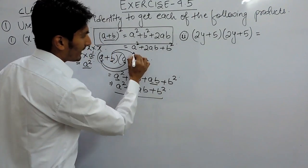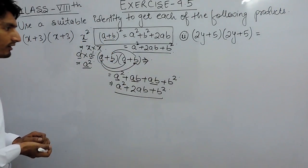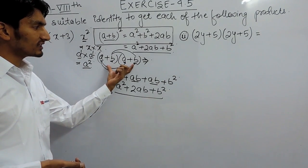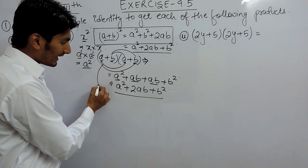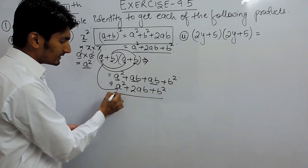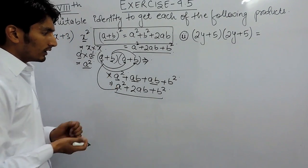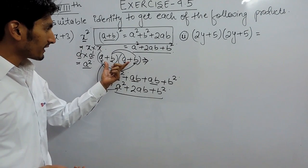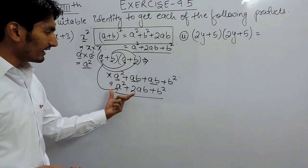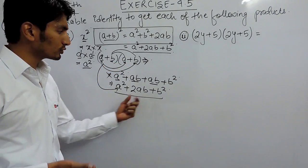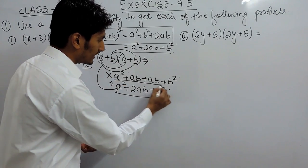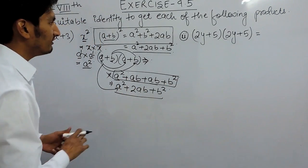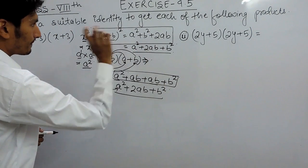This confirms the identity. So whenever an expression is in this form, we can directly write the result — there is no need to write the intermediate multiplication steps. We can skip the middle step and directly use the formula.